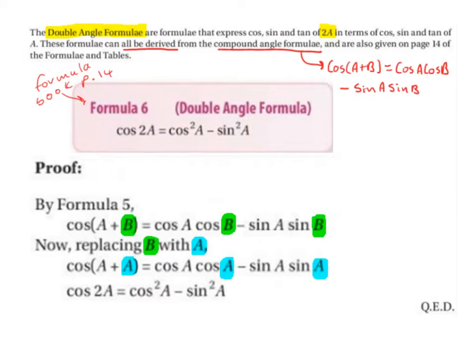The proof of this can be found using formula 5, which is cos(A + B) equals cos A cos B minus sin A sin B.